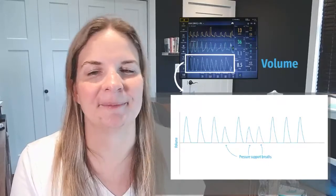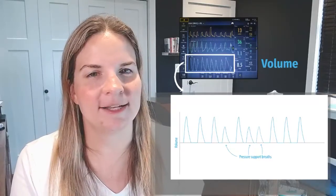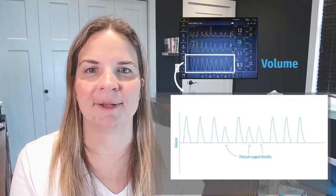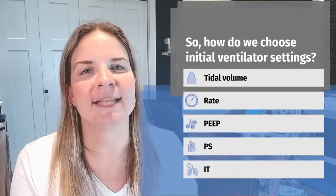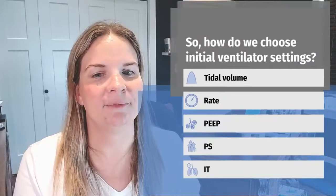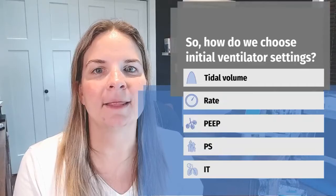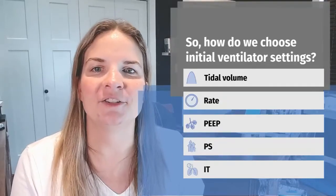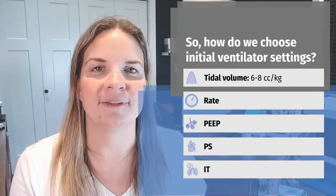Now that you know your way around the ventilator, how do you decide what settings to use for your patient? I'll give you an idea of some initial settings as a starting point. In PRVC, the settings we need to enter include tidal volume, rate, PEEP, pressure support, and inspiratory time (or I-time). Tidal volume determines the amount of volume delivered with each breath and should usually be set at 6 to 8 cc's per kg. Adjustments to this value primarily affect oxygenation.